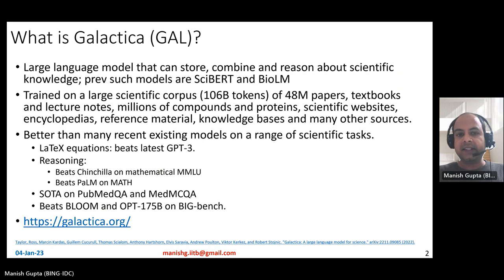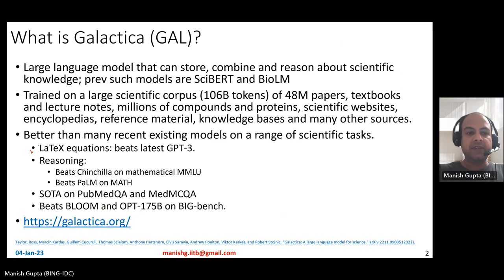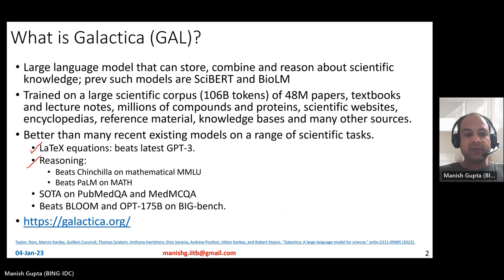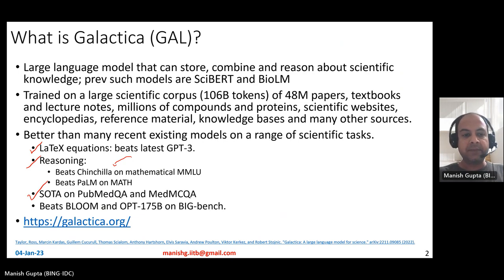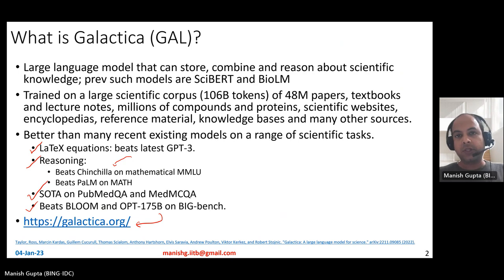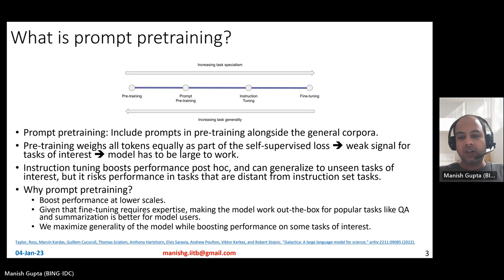Galactica has proven to be better than many recent existing models on a large range of scientific tasks. For example, it has been shown to beat GPT-3 in predicting LaTeX equations. On reasoning tasks, it beats the state-of-the-art Chinchilla model on the MMLU benchmark, and beats PaLM on math. It is state-of-the-art on benchmarks like PubMed QA and MED MCQA, and also beats Bloom and OPT-175 billion on the Big Bench benchmark. You can go to galactica.org or read the paper to learn more.